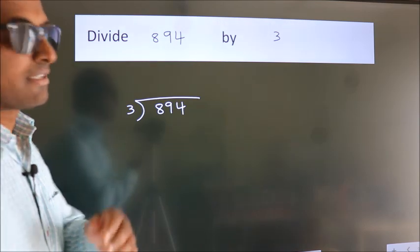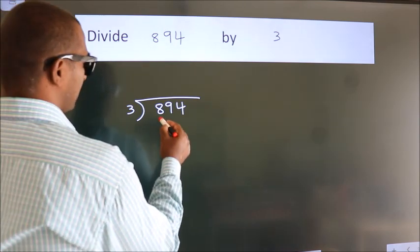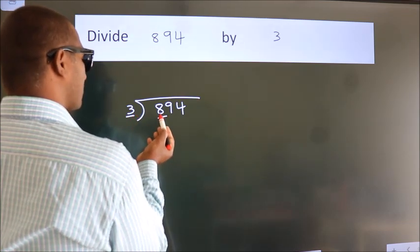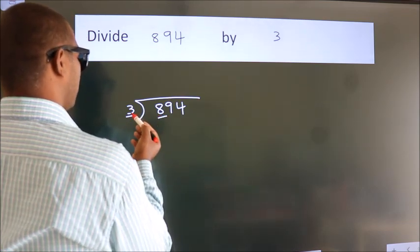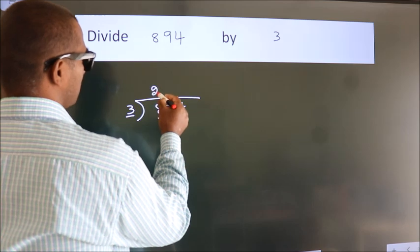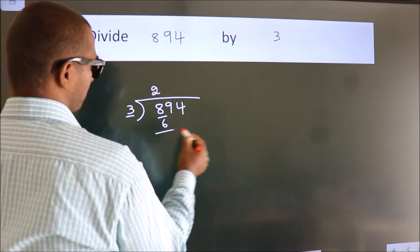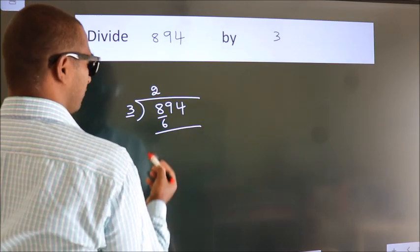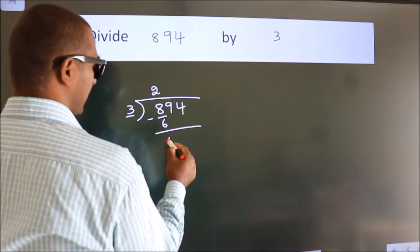Next, here we have 8, here 3. A number close to 8 in 3 table is 3 times 2, which is 6. Now we should subtract. We get 2.